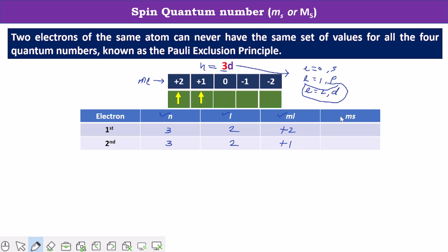Let's calculate the value of spin quantum number. Spin quantum numbers are of two types: for upward spin the value is plus 1/2, and for downward spin the value is minus 1/2. In this case, both electrons have upward spin. Therefore, ms is plus 1/2 for the first electron and plus 1/2 for the second electron.